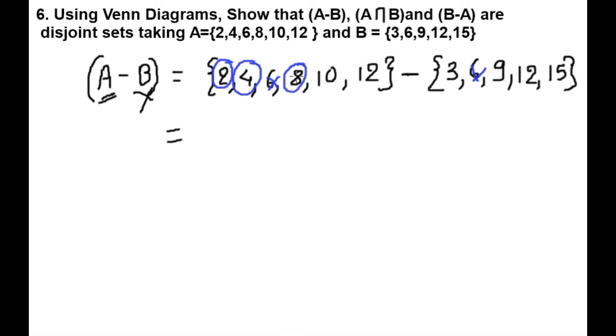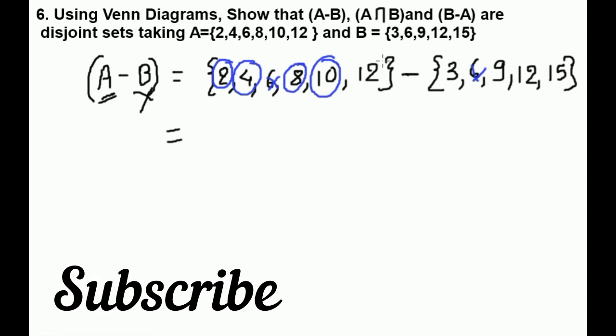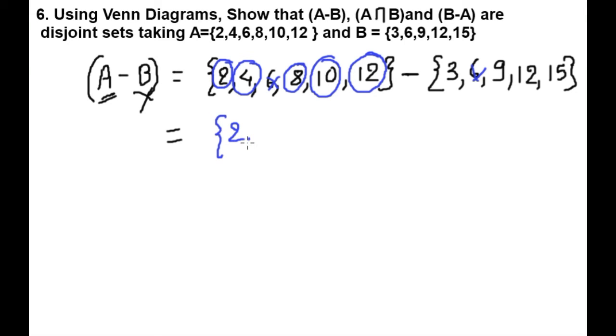8 is only in set A, not in set B. 10 also. Wait, 12 is in both sets, not only in A. So A-B = {2, 4, 8, 10}. Now how will we represent A-B on the Venn diagram?